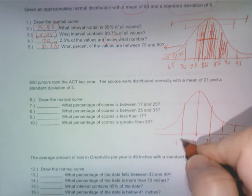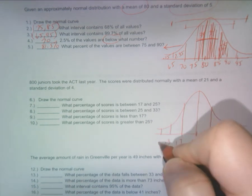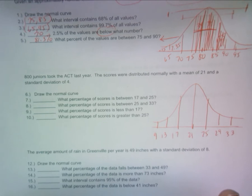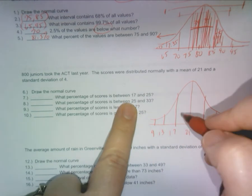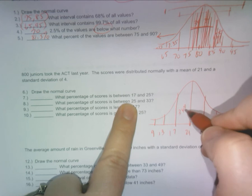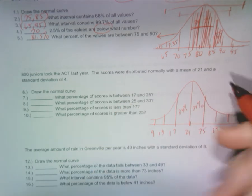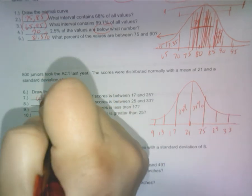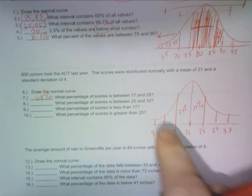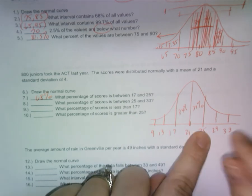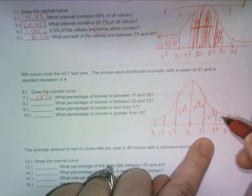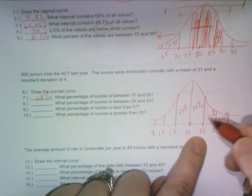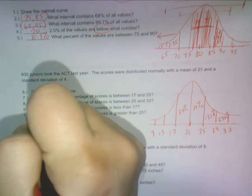Minus 4 would be 17, 13, and 9. And then what percentage is between 17 and 25? So that's easy, 34, 34, 34 makes 68%. What percentage is between 25 and 33? So that would be the 13.5 and the 2.35. Add those two together and you get 15.85%.